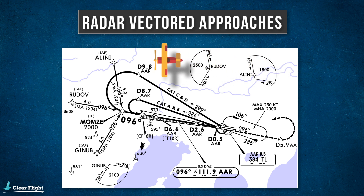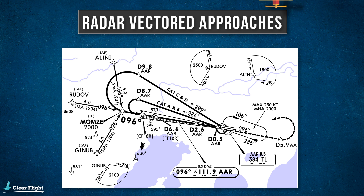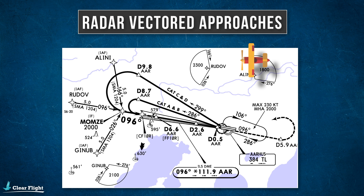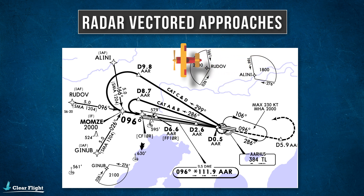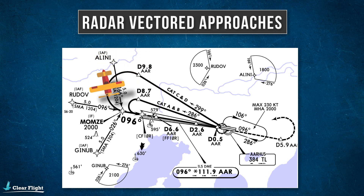Throughout a vectored approach, air traffic control will give you headings to fly and altitudes to maintain that will position your aircraft onto the final approach. To provide these vectors, the air traffic controller uses their radar screen and gives you instructions such as: turn right heading 270 degrees, turn left heading 170 degrees, descend to altitude 2000 feet base leg, turn left heading 130 degrees, cleared ILS runway 10 right.